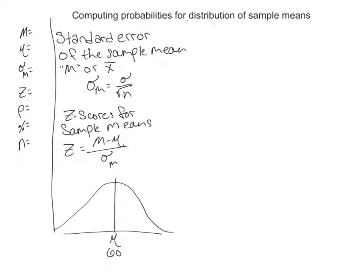We're going with this situation. For a normal population with a mu of 60 and a standard deviation of 12, what's the probability of selecting a random sample of 36 people with a sample mean greater than 64?